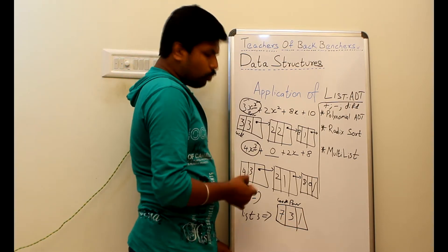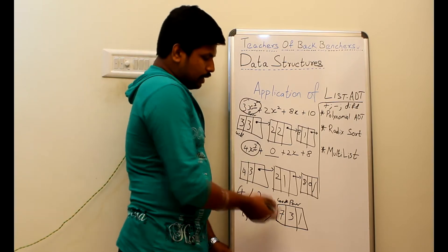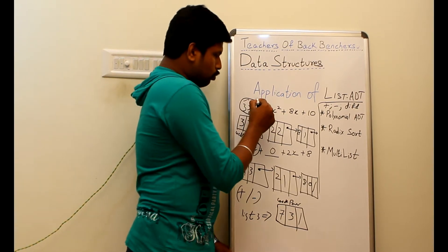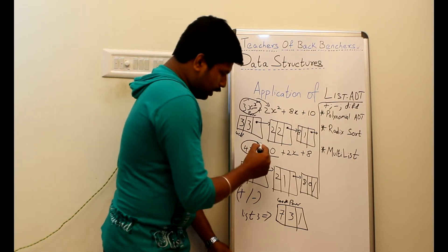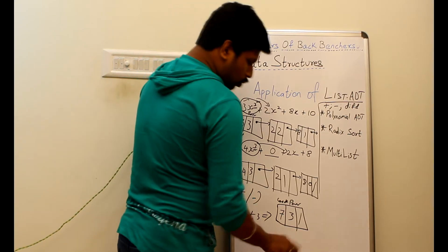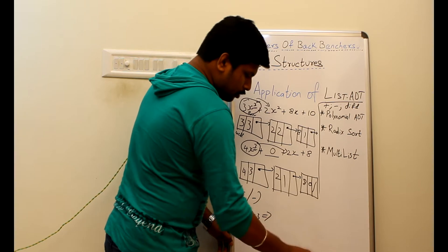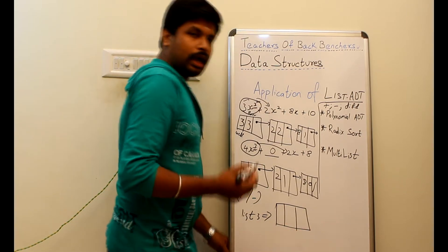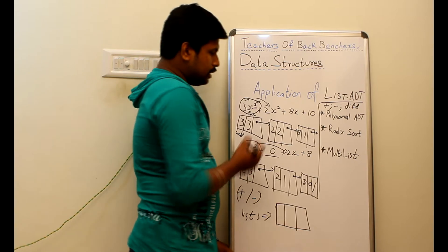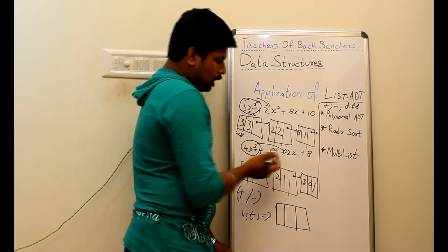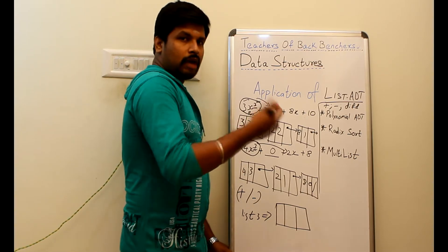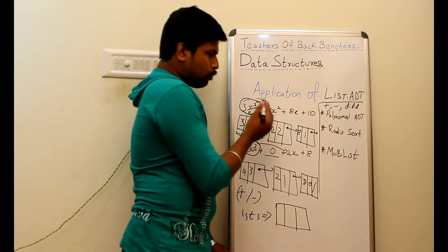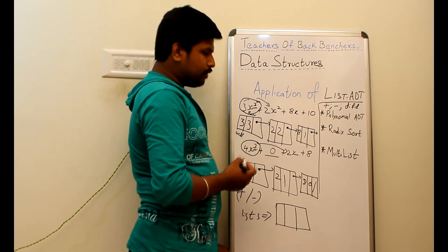We have added the first two polynomials and produced the output. Now we increment the pointers: from 3x³ it moves to 2x², and from 4x³ it moves to 2x. We repeat the process and create a new node. We check whether the powers are equal — the power of the first polynomial is 2 and the power of the second is 1, which are not equal, so we move to the next condition.